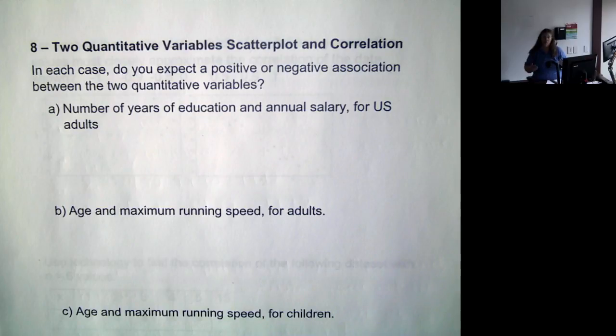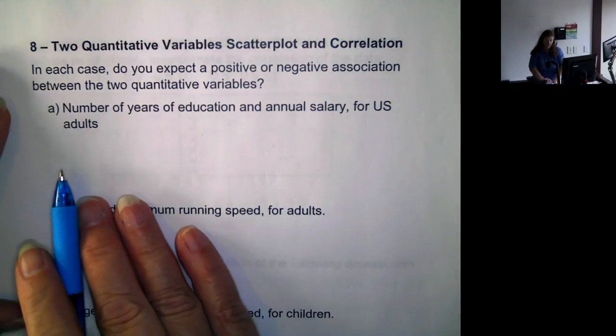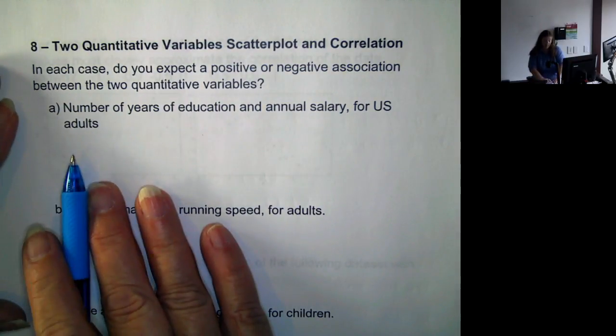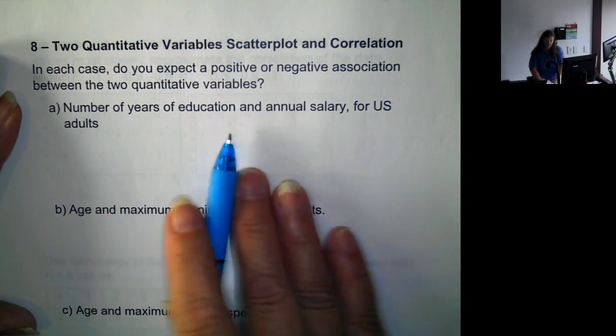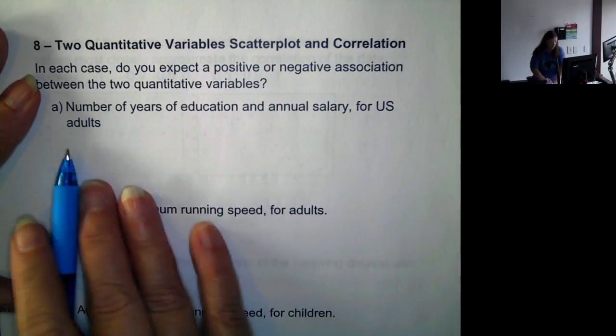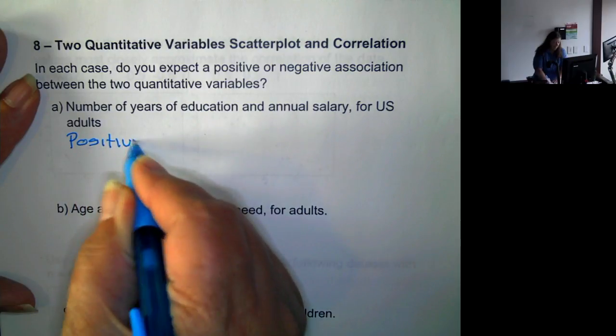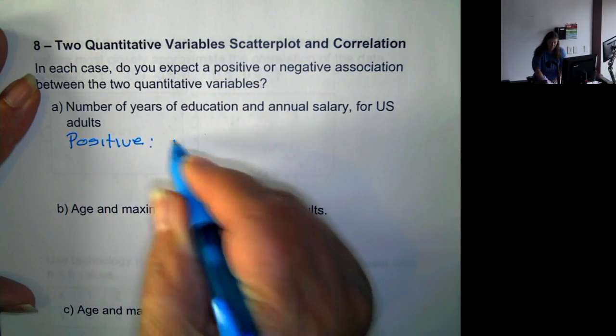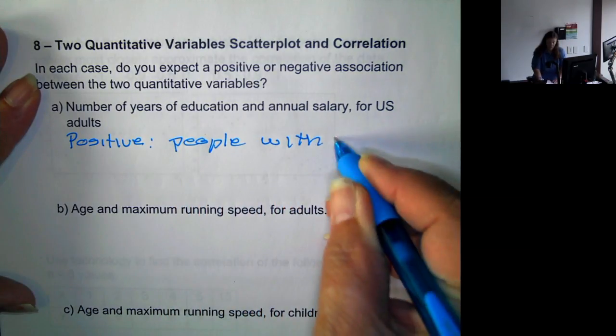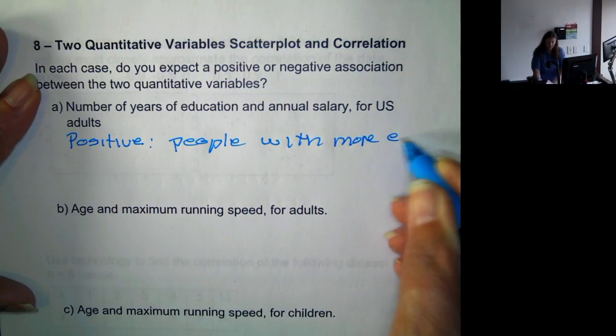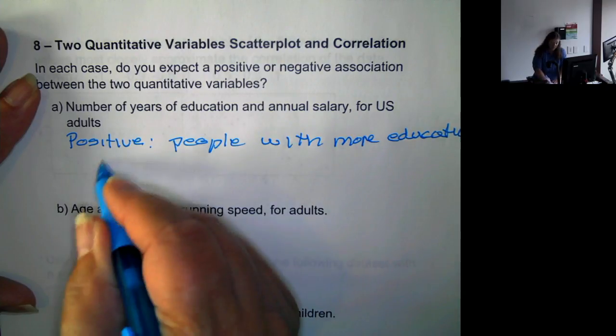Initially, though, we're going to just look at some problems to see what we think if there may or may not be correlation or association and if there would be positive or negative between the two variables. So here are a number of years of education and the annual salary for U.S. adults. I think this would be positive because people with more education generally make higher salaries.